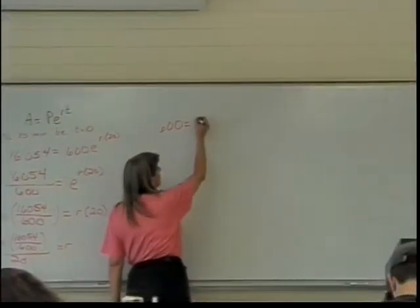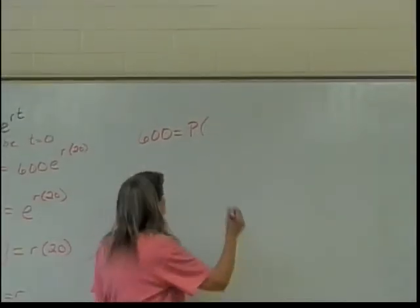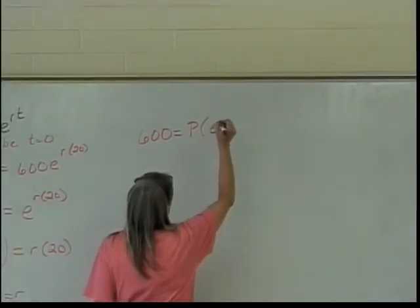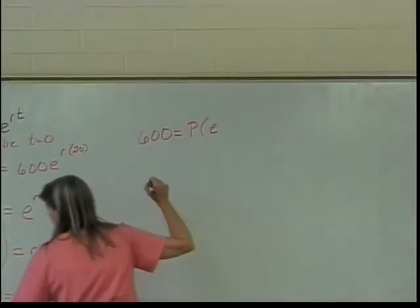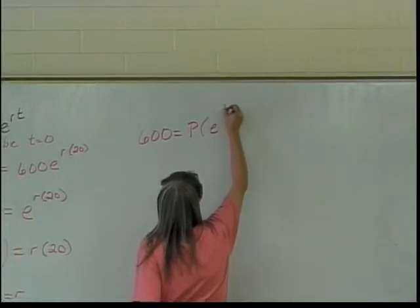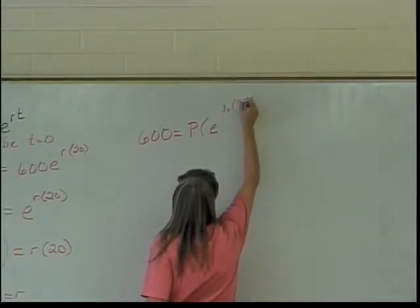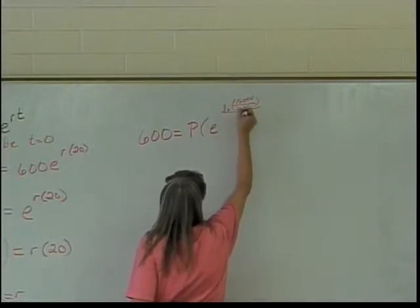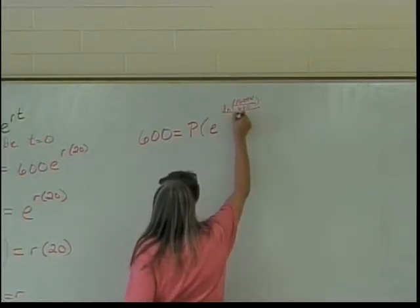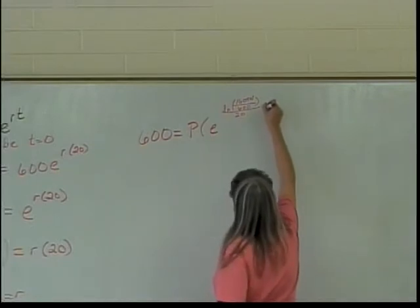because that's what I'm looking for, times E to the R. Okay. R is the natural log of 1654 over 600 divided by 20, and then what? Times 15.